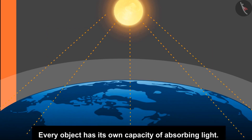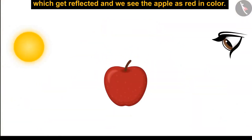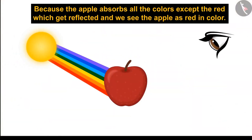These rays fall on various objects in the world, and every object has its own capacity of absorbing light. So why do we see apples as red? Because the apple absorbs all colors except red, which gets reflected — and so we see the apple as red.